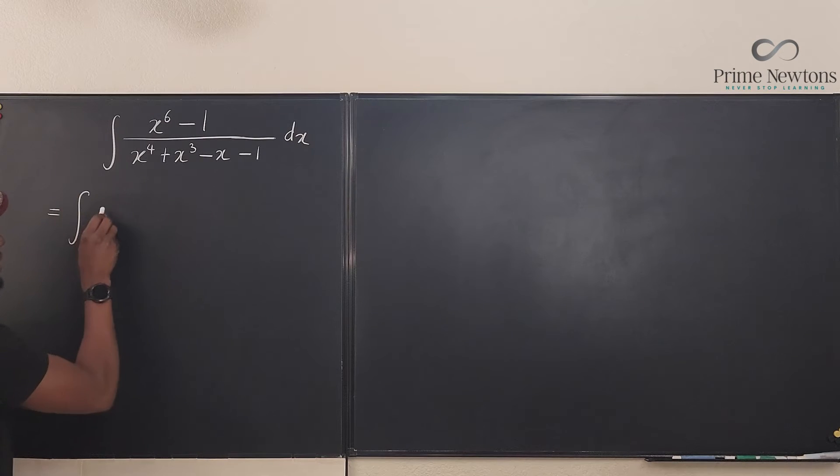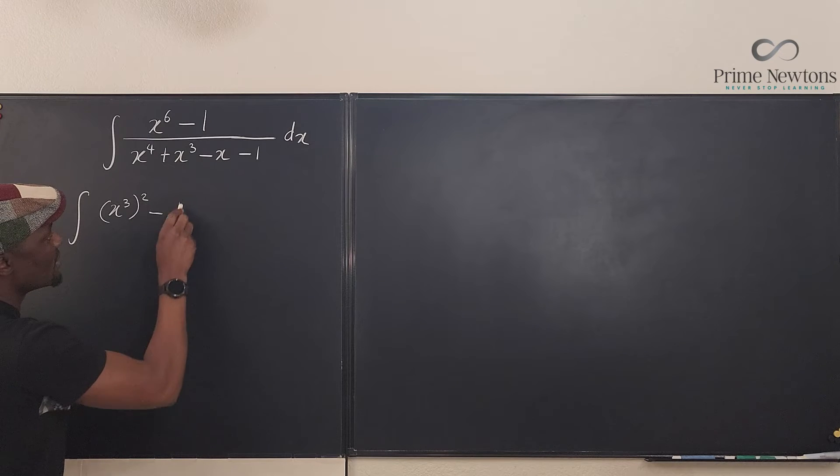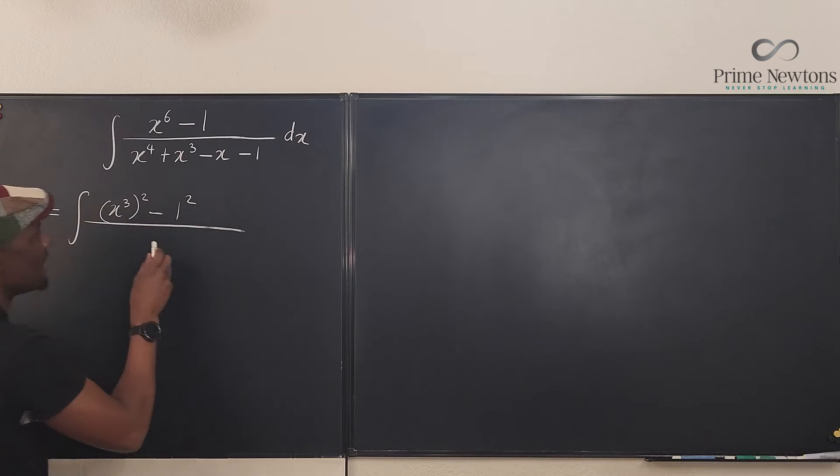Let's write this as the integral of x cubed squared minus minus one squared. Okay, divided by.